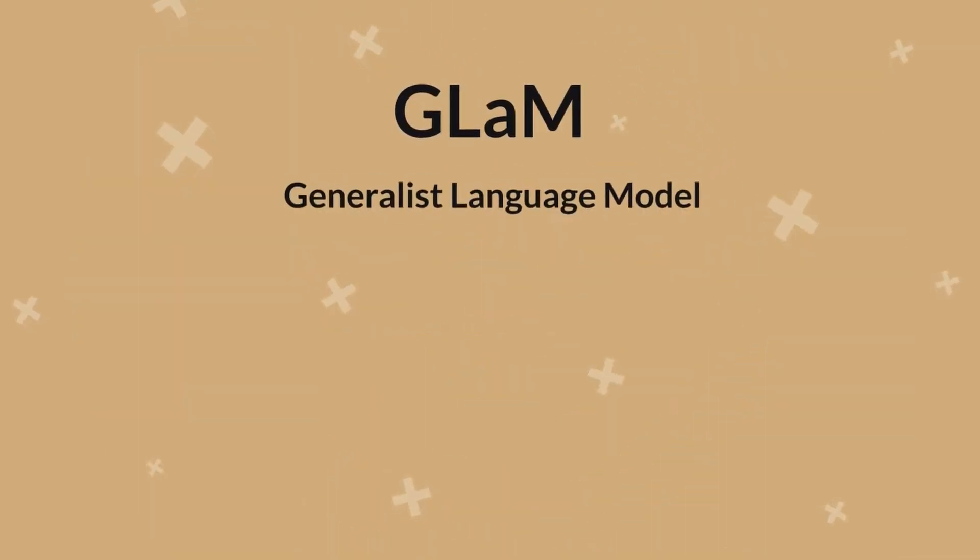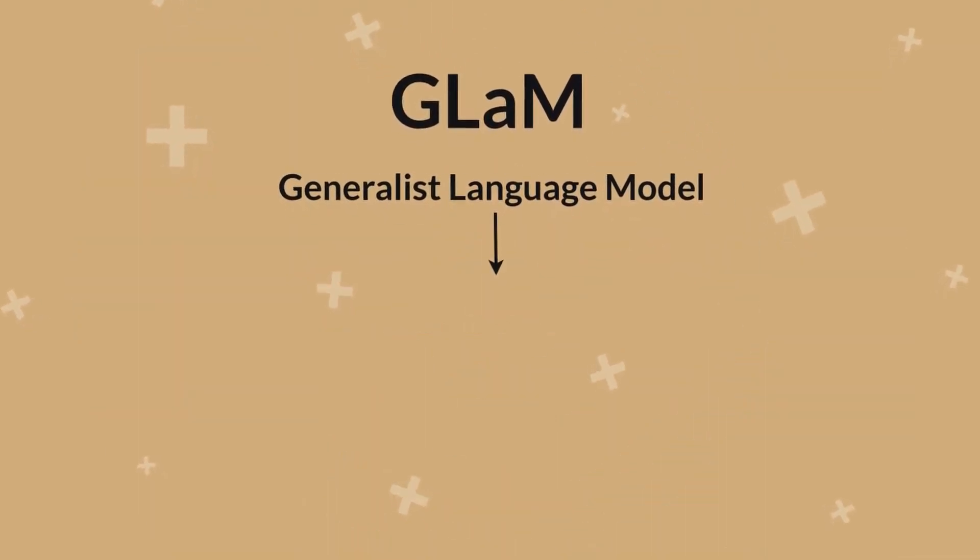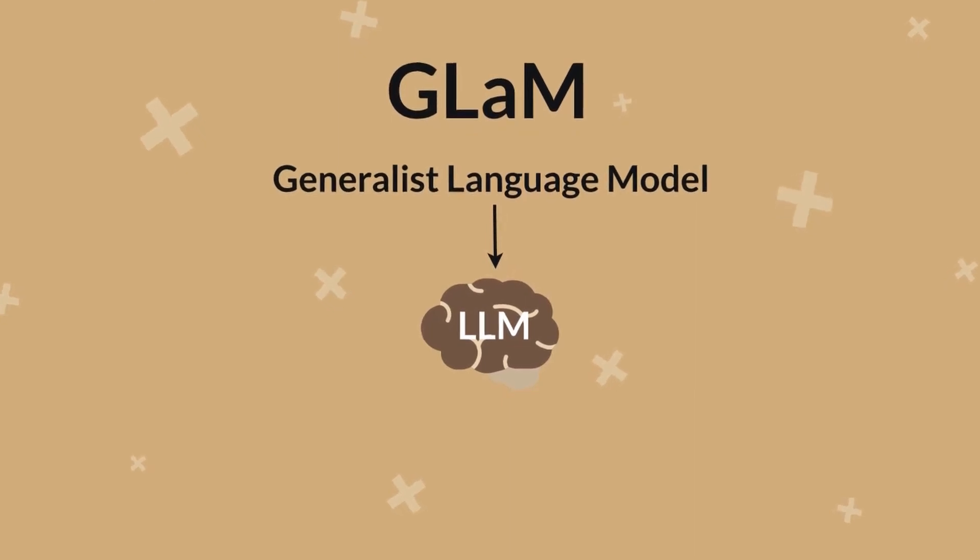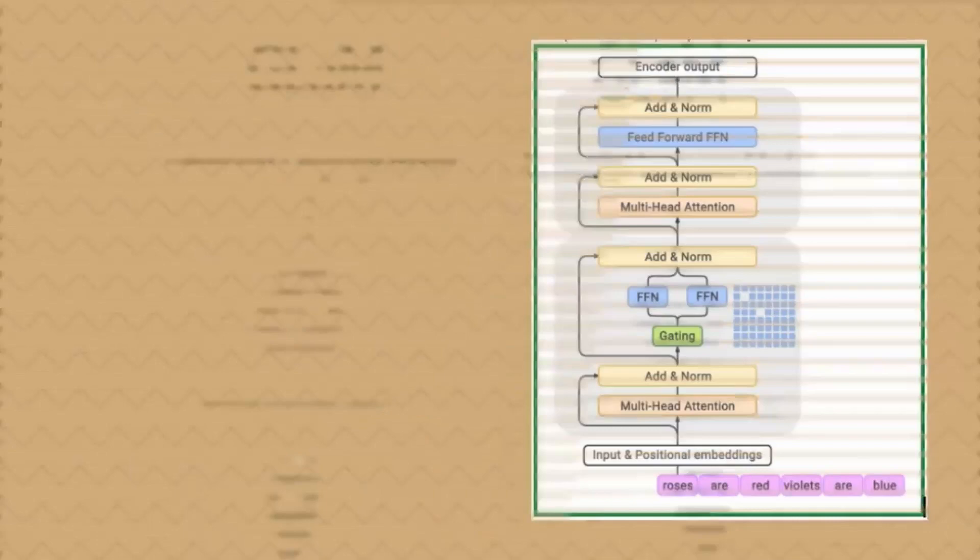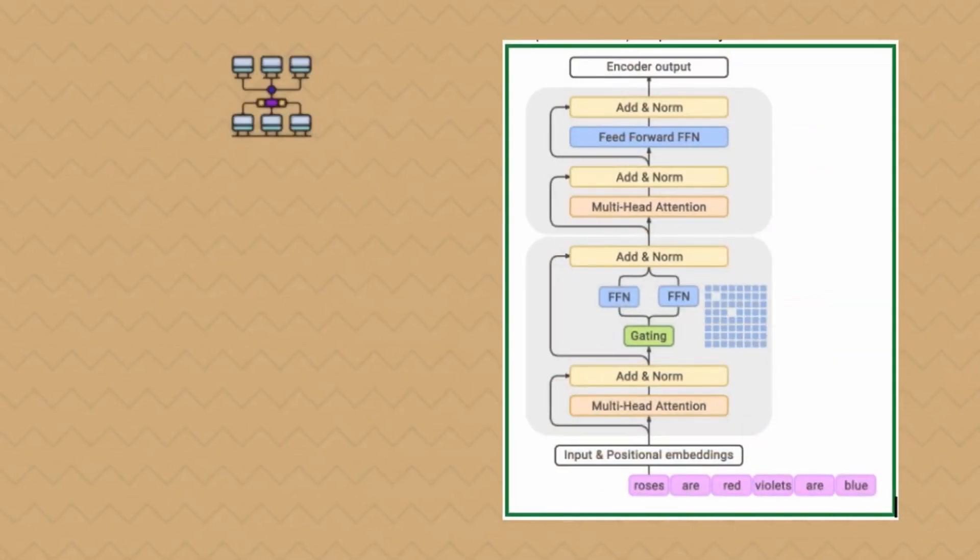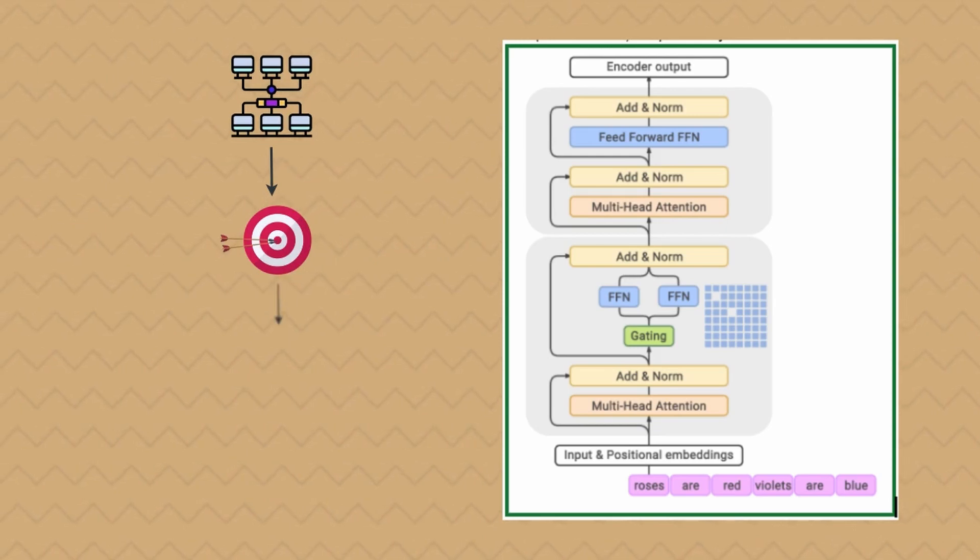GLAM, or Generalist Language Model, is a transformative approach in the development of large language models, standing out for its innovative mixture of experts (MOE) architecture. This sparsely activated design significantly reduces the computation resources and energy required during training, enabling the model to achieve superior performance on a range of natural language processing tasks with a substantially lower environmental impact.